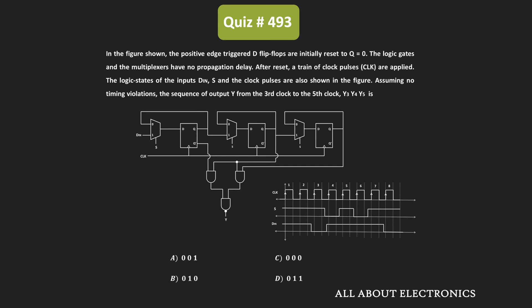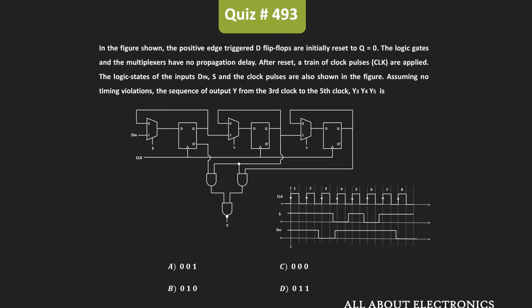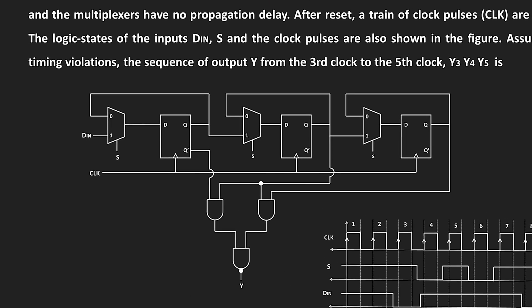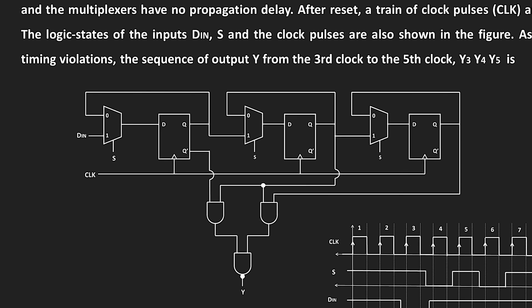Hey friends, welcome to the YouTube channel All About Electronics. So in this question, we have been given this synchronous sequential circuit, and as you can see, it consists of the D flip-flops, the multiplexers, and the logic gates.